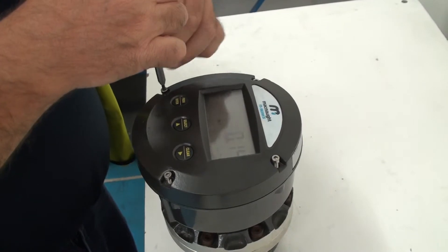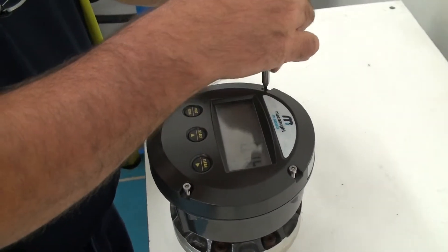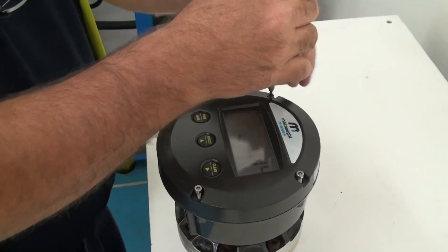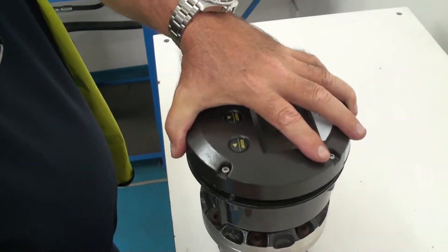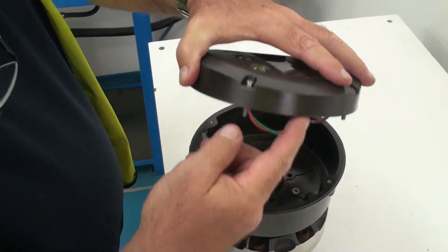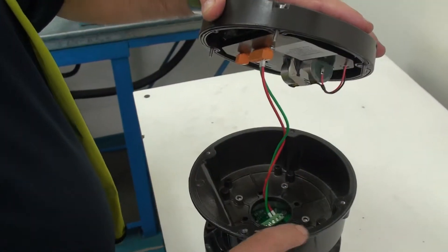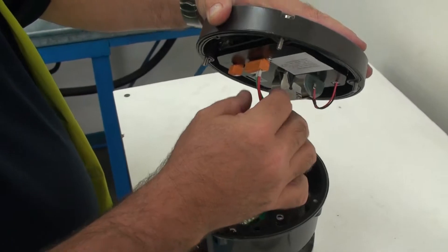So we start by removing these four Allen screws and that will allow us to get into the internals of the register. So we remove the face now. It may be stuck by the seal that's on here. Sometimes they stick on the surface here and are a bit hard to get off.